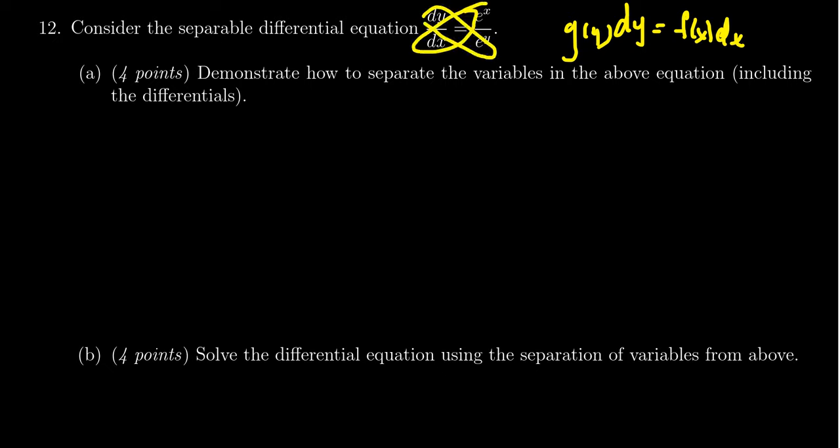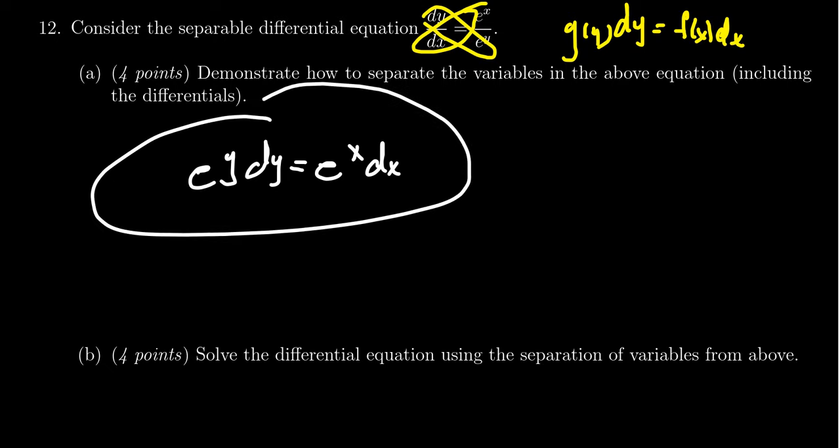And so we see that dy times e to the y is equal to e to the x dx. And so not a lot to show there, but that's what we get for separation of variables. E to the y dy is equal to e to the x dx.